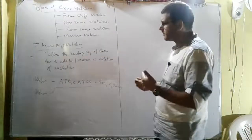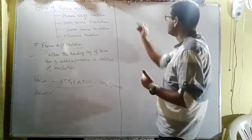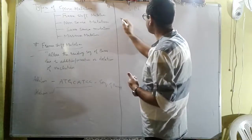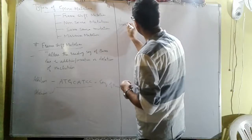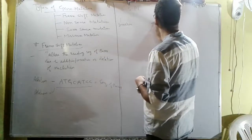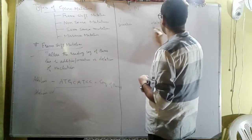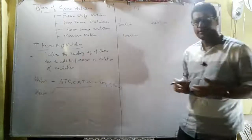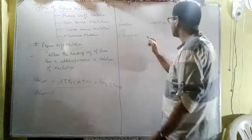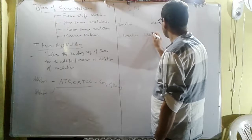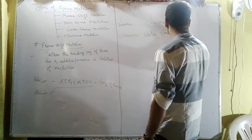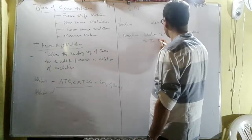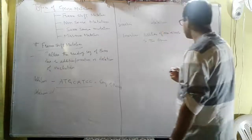When we talk about addition and deletion, frame shift mutation is of two types: insertion and deletion. In insertion, there is simply an addition of one or more nucleotides to the gene.